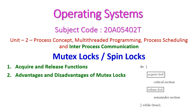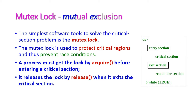Hello friends, welcome to today's operating system class. In this class we will see the mutex locks, which is otherwise called as spin locks. The mutual exclusion is simply called as mutex, and this is the very simplest software tool to solve the critical section problem. The mutex locks are used to protect the critical region and prevent race conditions.